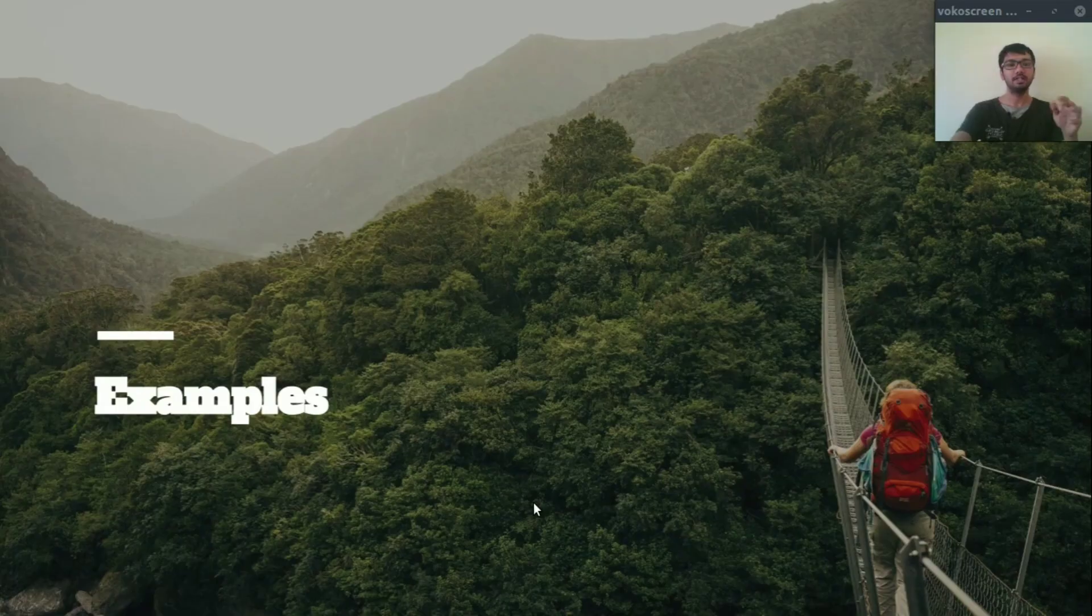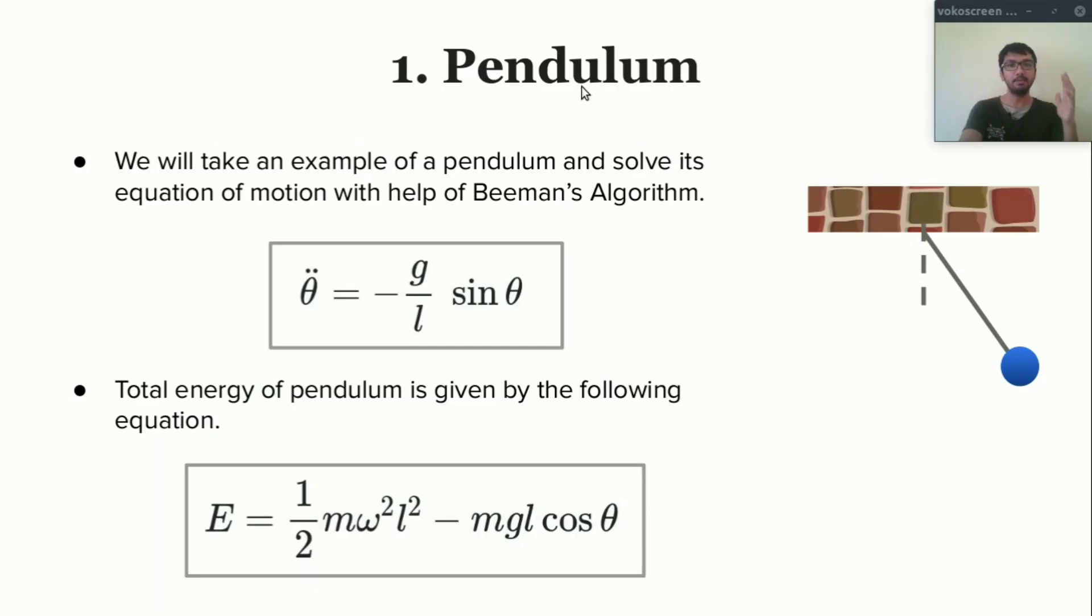Let's start. The first example is pendulum. As we all know, pendulum performs an oscillatory motion where once we release it from some angle theta, and its motion is governed by this differential equation. Here theta double dot is the second derivative of angle, G is the gravitational acceleration, L is the length of arm, and this is the simple sine theta.